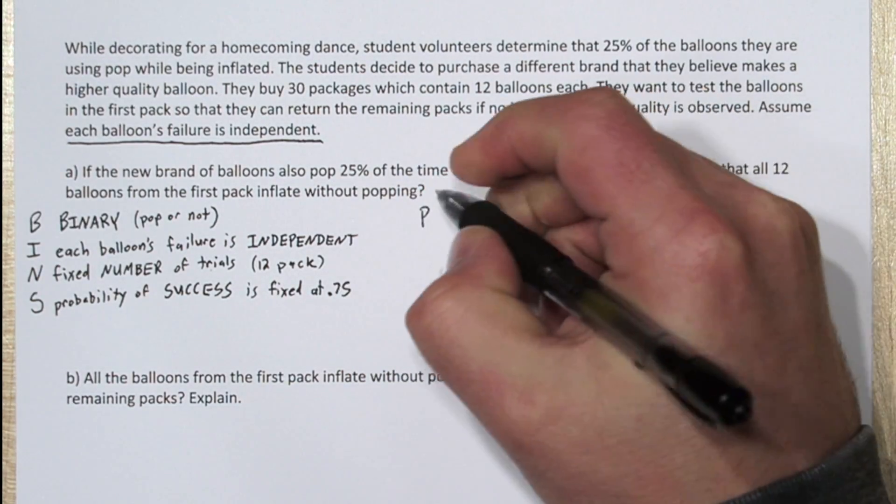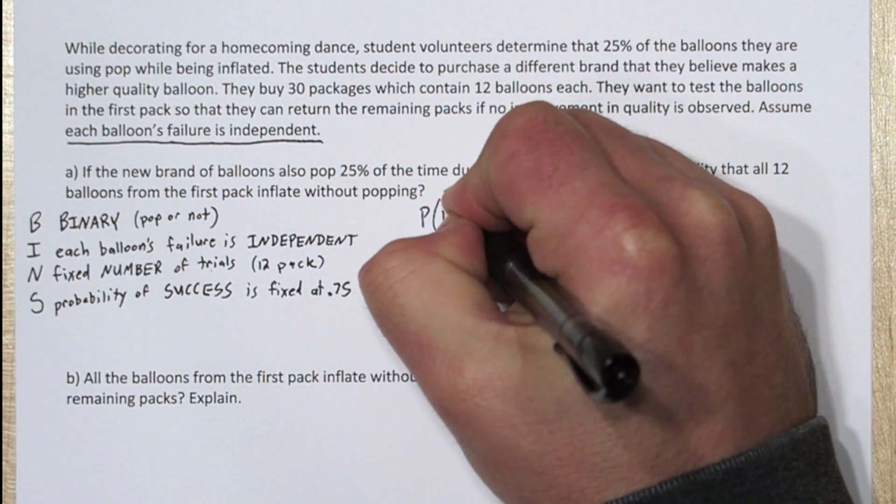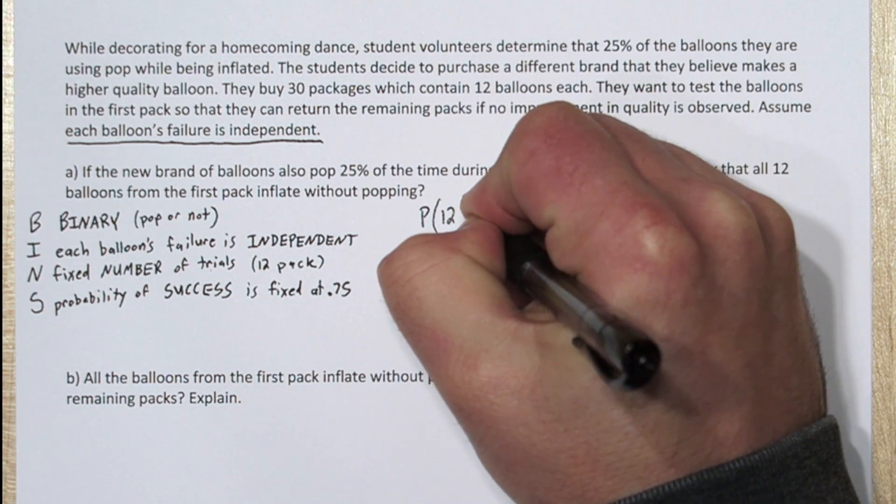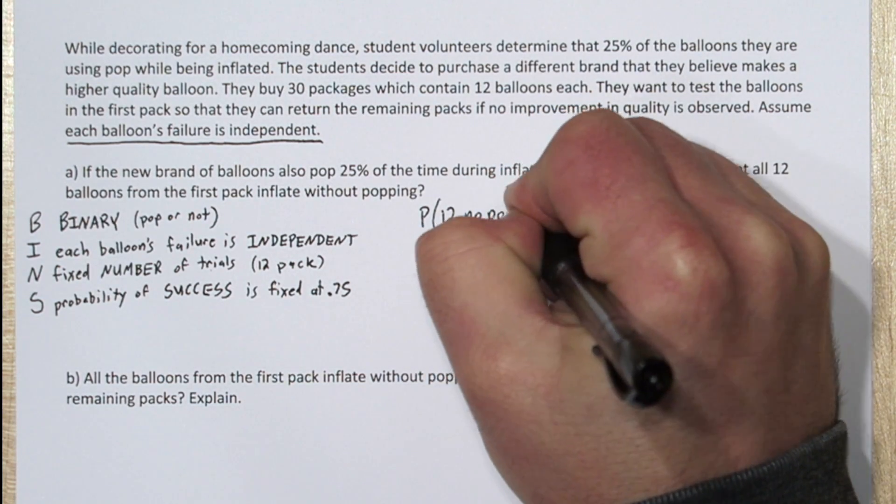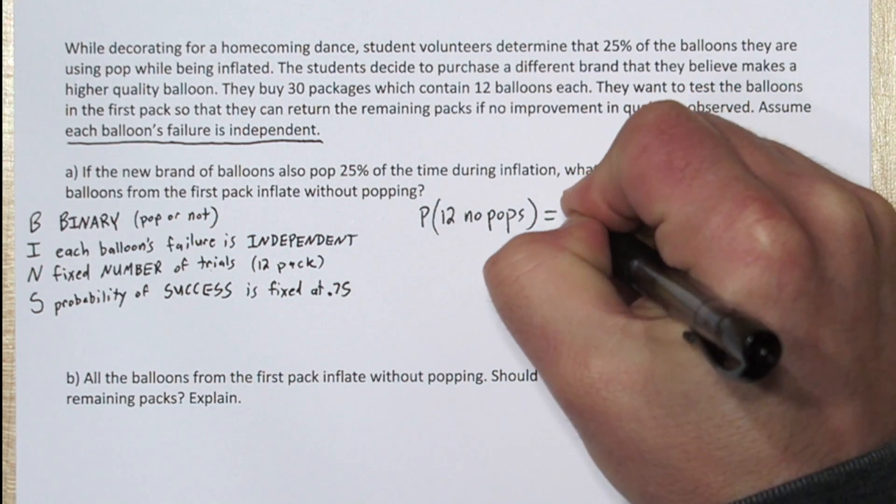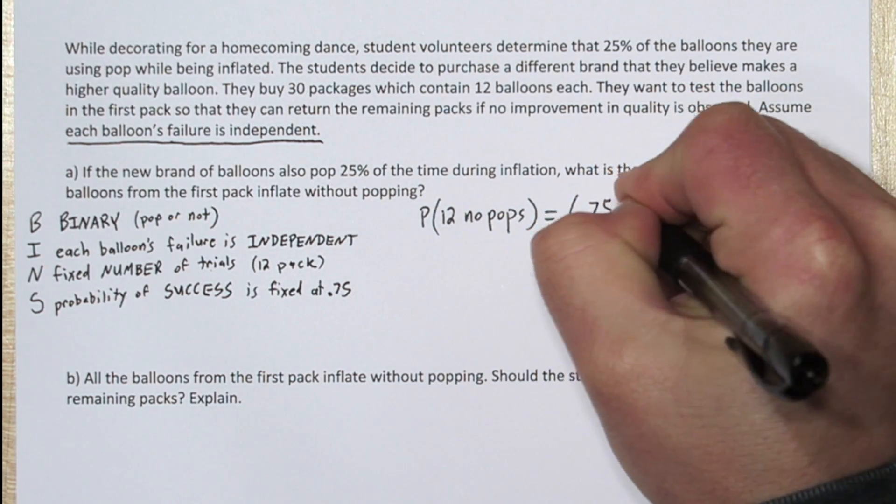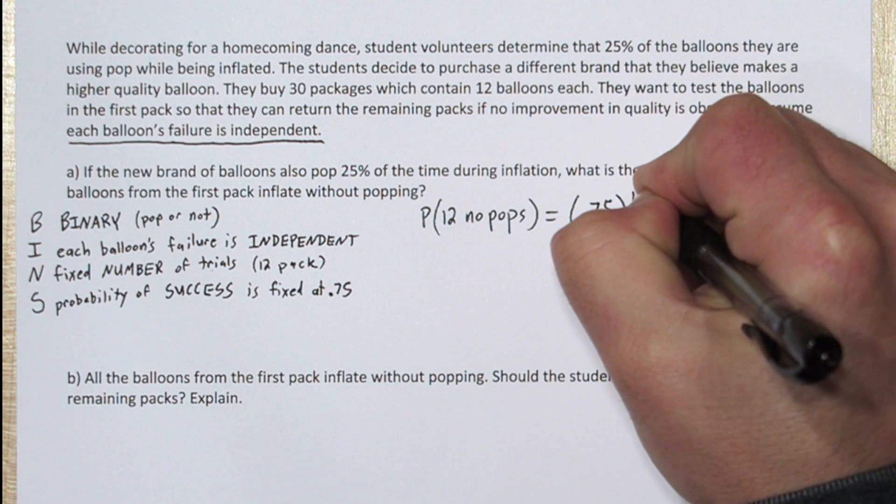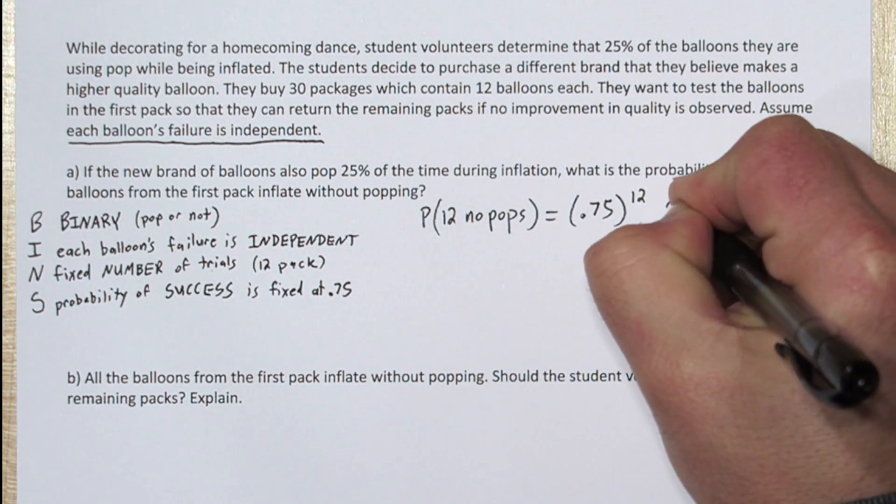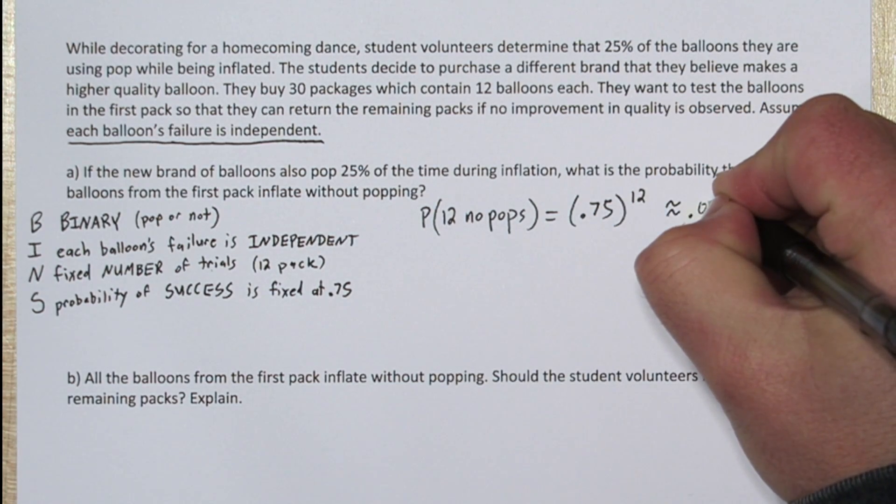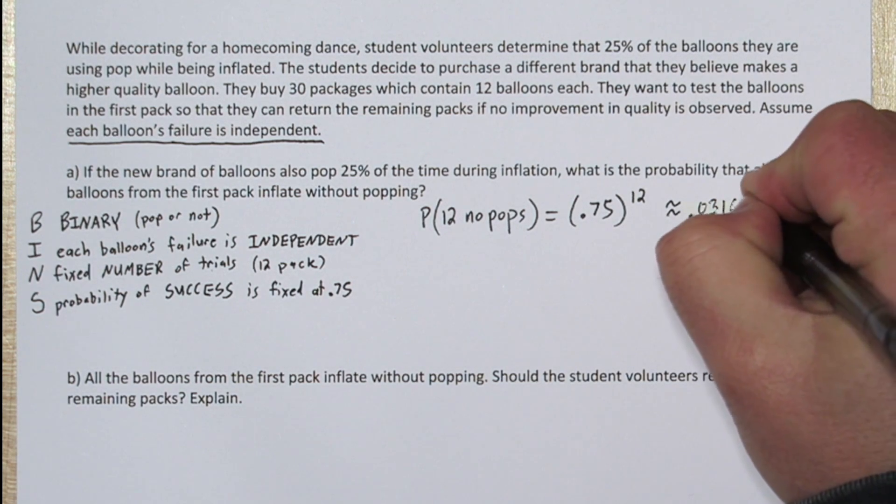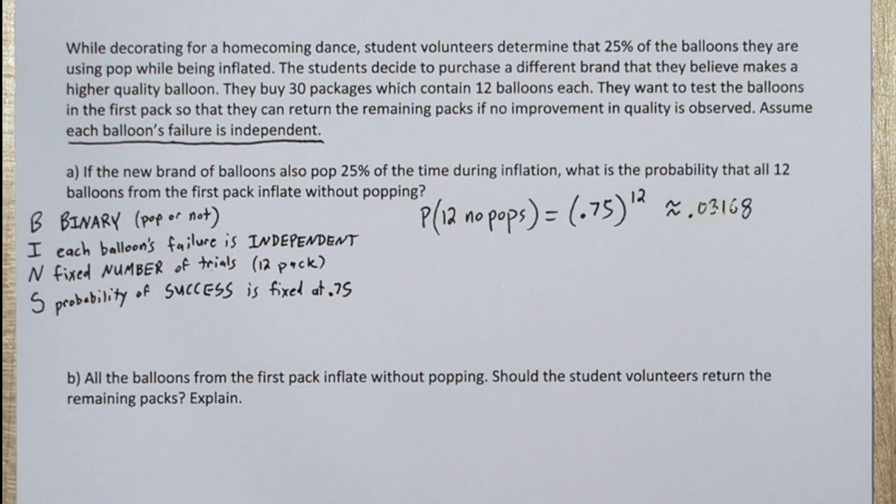Because each balloon is independent of the others, and the probability of a balloon not popping is 0.75, we can just multiply the probability of the balloon not popping, 0.75, by itself 12 times. So 0.75 to the 12th power. This is just using the multiplication rule for independent events. That tells us the probability of the first 12 balloons not popping is approximately 0.03168.